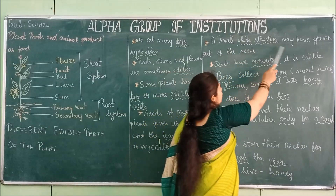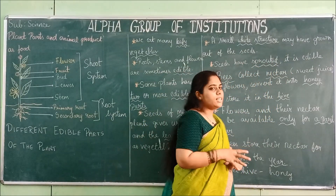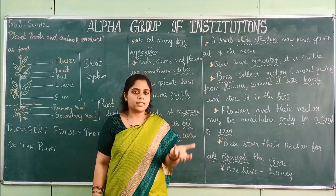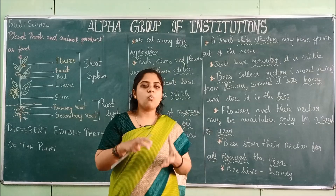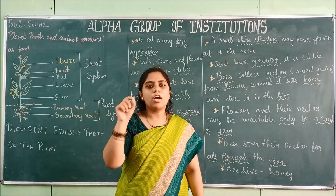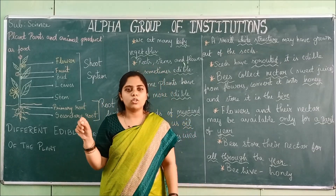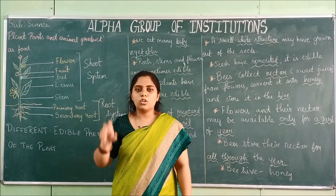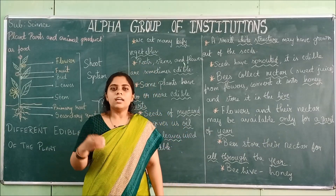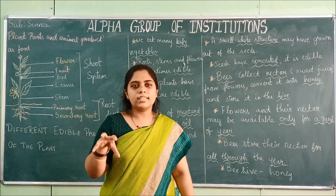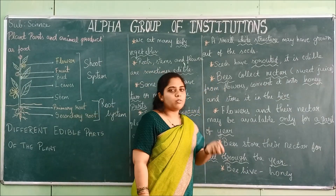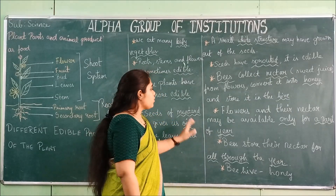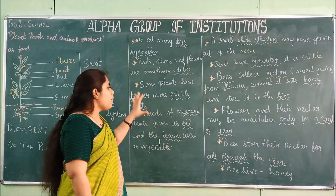A small white structure may grow out of seeds. If you take any seeds and wrap them in a wet cloth and keep them overnight, in the morning you can see small white outgrowths in the seeds. Those are known as sprouts — the seeds have sprouted. Sprouts can be eaten raw, mixed with spices, or cooked. The white outgrowth from the seed is called a sprout, and the seeds are called sprouted seeds.